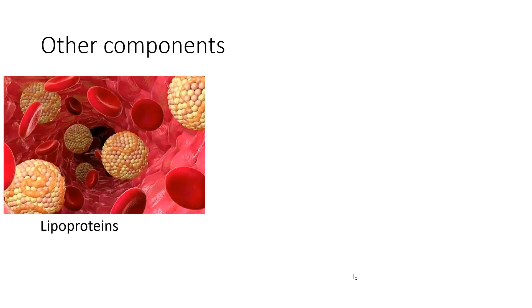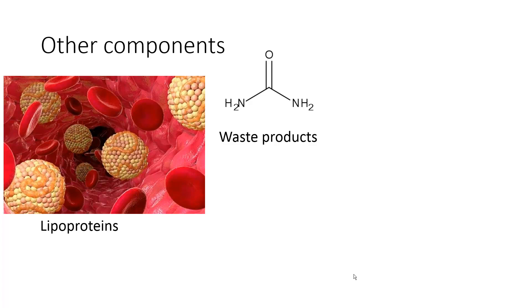Finally, there is the miscellaneous category — that 2% of stuff that doesn't fall into the class of water, protein, or electrolyte. That's going to include things like lipoproteins, which we learned about in our module on adipose tissue — very low density lipoproteins and chylomicrons, which is how we transport dietary fats in our blood. There are also waste products; since blood is a transporting tissue, wastes generated in peripheral tissues — like urea, uric acid, creatinine, and other non-protein nitrogenous substances — are transported to the kidneys for eventual excretion in the urine.